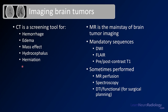CT is often a screening tool when people present with their initial symptoms. MRI, however, is the main modality for tumor imaging. When you do MRI, there are a couple of mandatory sequences: diffusion, FLAIR, and pre- and post-contrast T1. You'll sometimes also perform MRI perfusion, spectroscopy, and diffusion tensor imaging or functional imaging — these are tools used to troubleshoot problems or to plan for surgery.